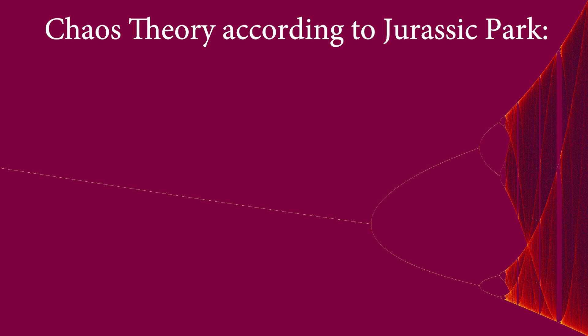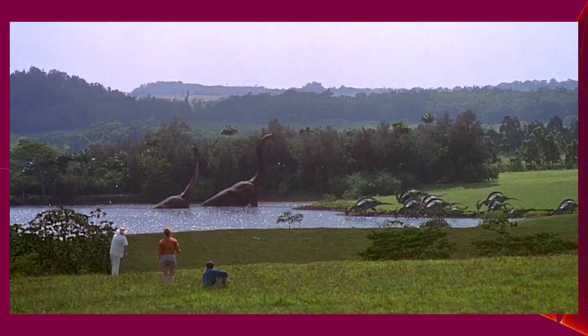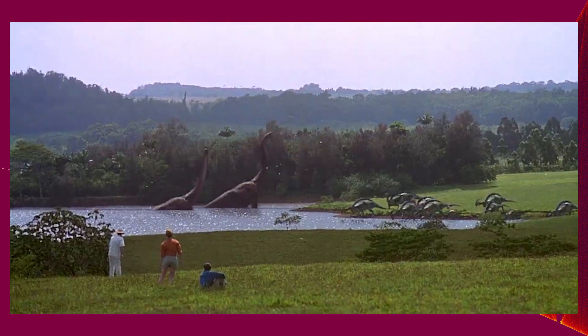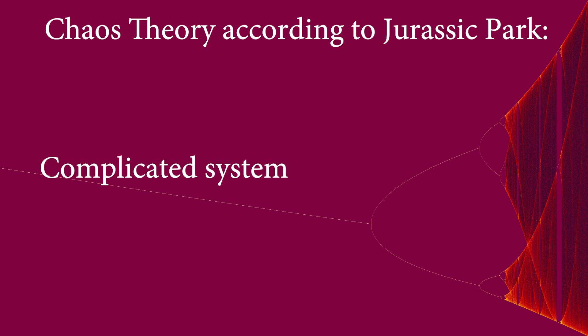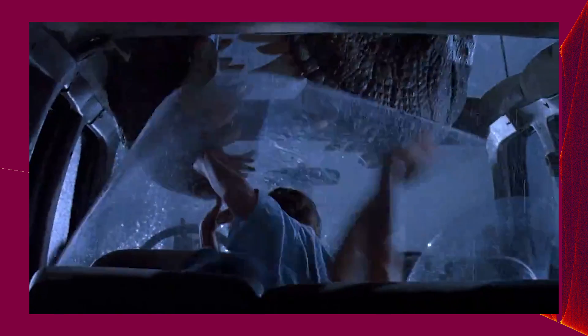This idea is that you take a very complicated and intricate system, and that will always lead to a very high level of unpredictability. He basically says that whenever you're in this situation, that is what we call chaos.